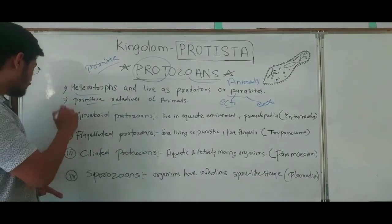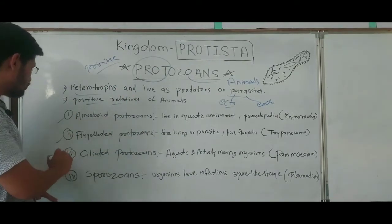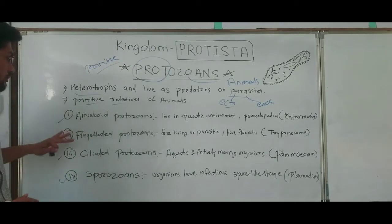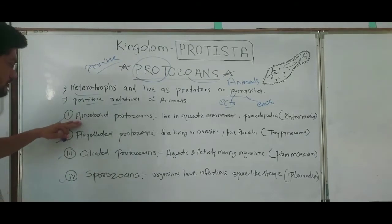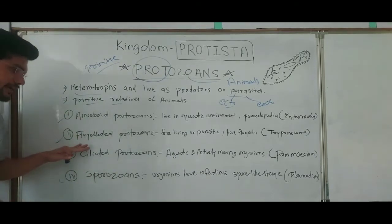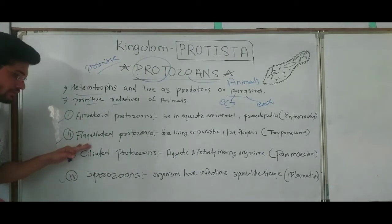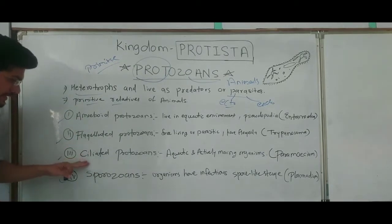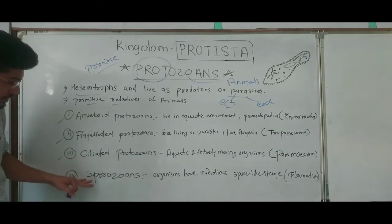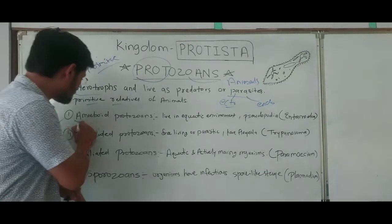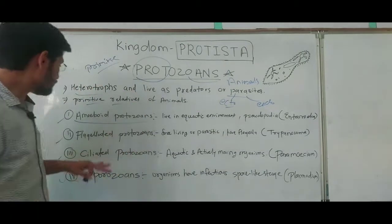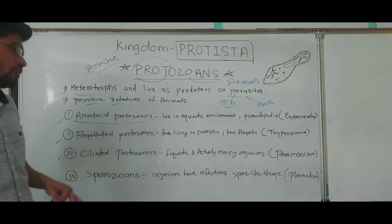Protozoans are divided into four groups: amoeboid protozoans, flagellated protozoans, ciliated protozoans, and sporozoans. Let's learn about each of these groups.